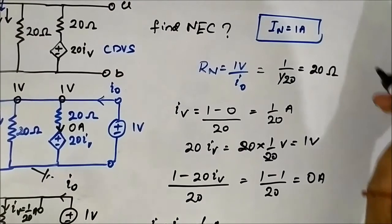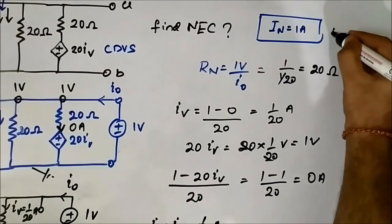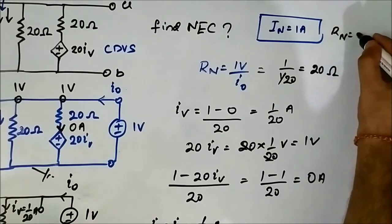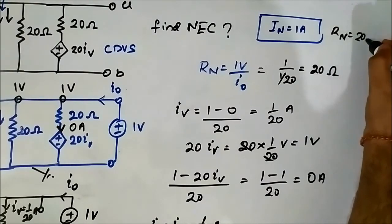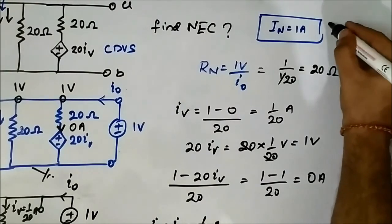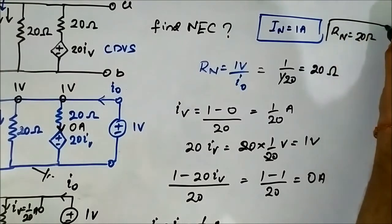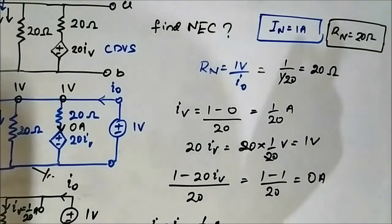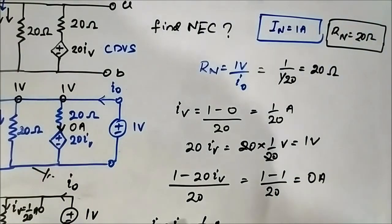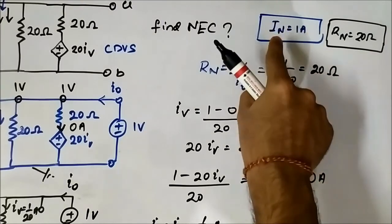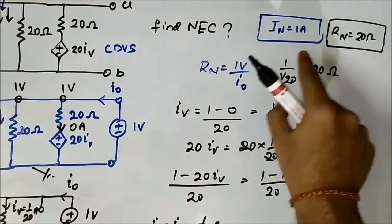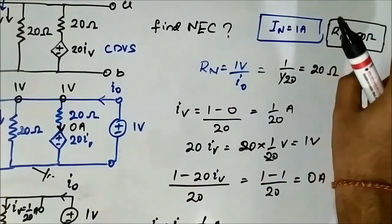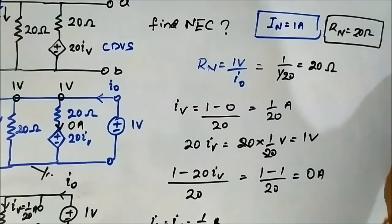So IN equals 1 ampere and Rn equals 20 ohm. These are the two parameters for the Norton equivalent circuit. The Norton current is 1 ampere and the Norton equivalent resistance is 20 ohm.